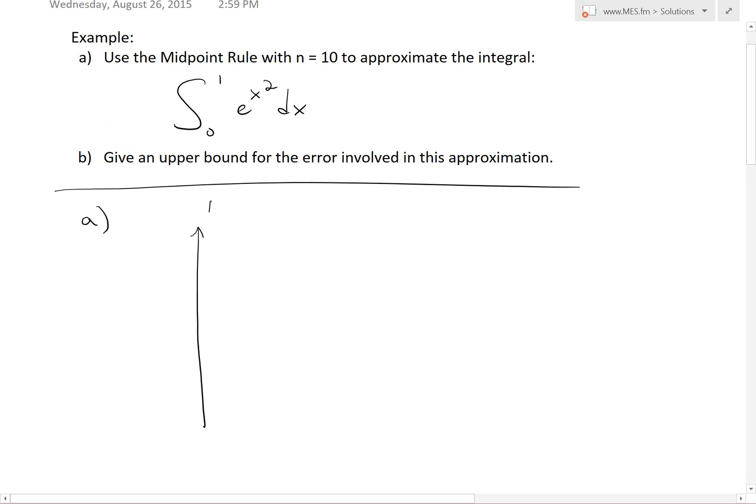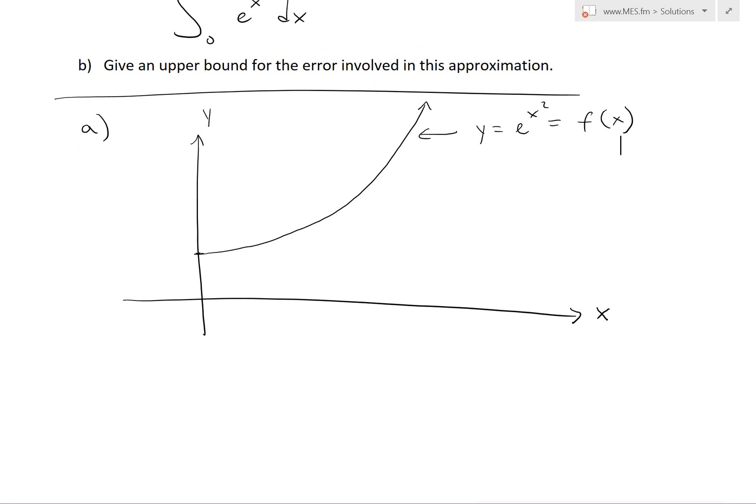So if we were to graph this function, let's call that f of x. We'll call this y, and x. When you plug in zero inside, you have e to the zero, which is one. So the function looks something like this, and it just increases when you put a bigger number in terms of x. So it keeps going up and up. This is y equals e to the x squared, or f of x. We have this, and now it's from zero to one.